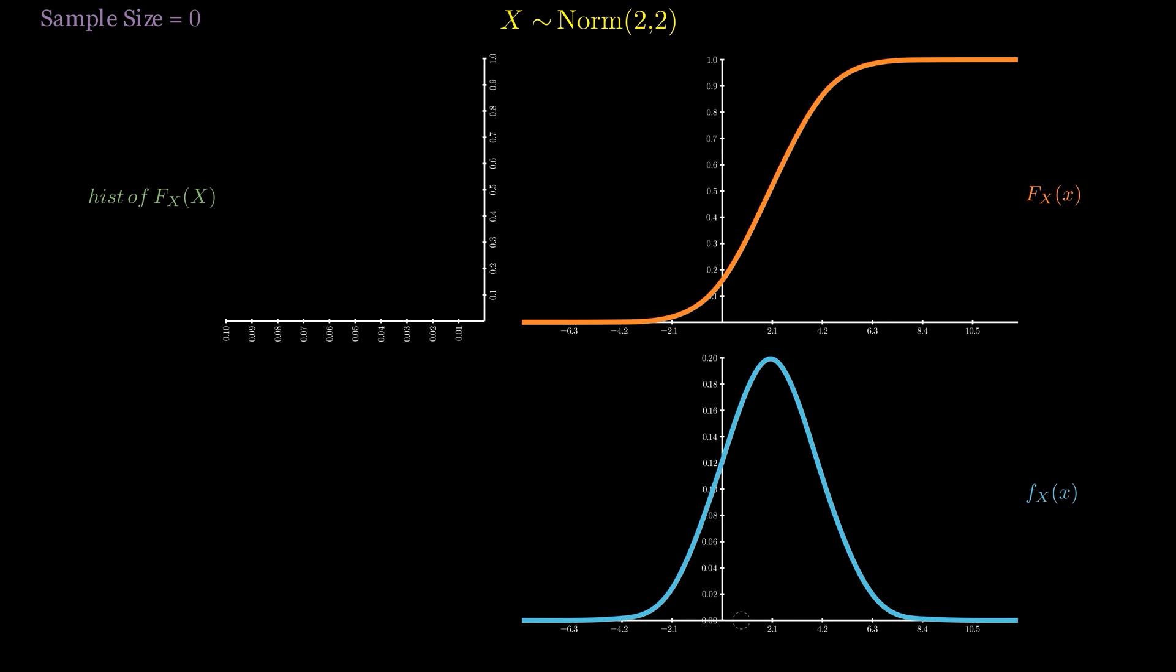Inverse transform sampling stands on the shoulders of an absolutely remarkable property of the uniform distribution, a property known as the universality of the uniform. It says that if, for example, you start by sampling a random variable X from